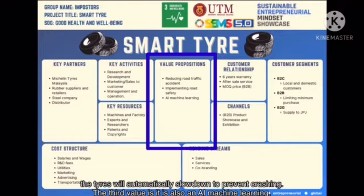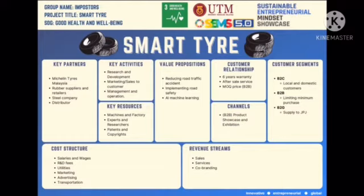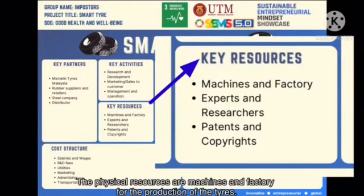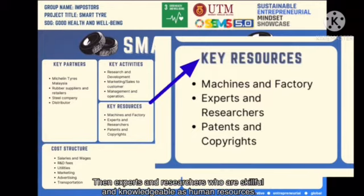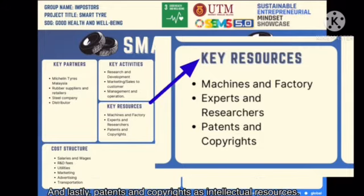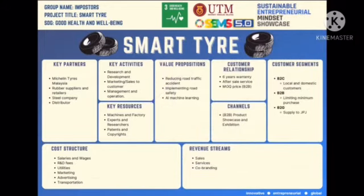The third value is that it also incorporates AI machine learning. Next, we will go to the key resources. The physical resources are machines and factories for the production of the tyres — these are the tangible resources. Then, experts and researchers who are skilled and knowledgeable serve as human resources. And lastly, patents and copyright as intellectual resources.